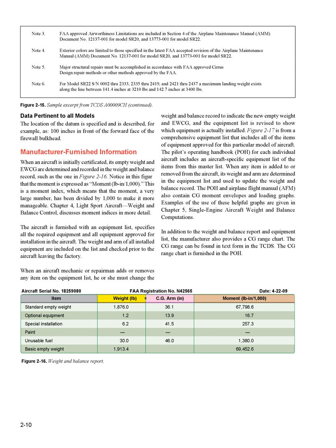Data pertinent to all models specifies the location of the datum — for example, 100 inches in front of the forward face of the firewall bulkhead. Manufacturer Furnished Information: when an aircraft is initially certificated, its empty weight and EWCG are determined and recorded in the weight and balance record, such as in figure 2-16. The moment is expressed as moment/1,000 — a moment index — which means the moment, a very large number, has been divided by 1,000 to make it more manageable. Chapter 4, Light Sport Aircraft Weight and Balance Control, discusses moment indices in more detail.